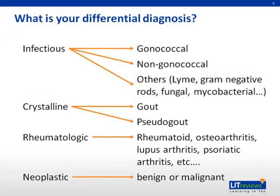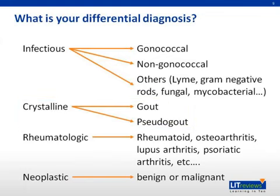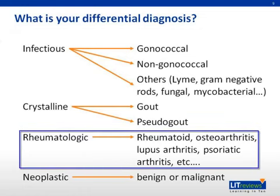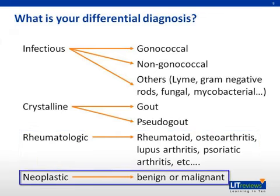In monoarticular arthritis, crystalline arthritis should also be considered, although these are less likely in a younger patient. The crystalline arthritides are gout and pseudogout. Other, although less likely, possibilities are rheumatologic and include rheumatoid arthritis, osteoarthritis, lupus arthritis, psoriatic arthritis, and others. Last but not least, neoplastic etiologies should be considered because these are diagnoses that we don't want to miss. Neoplasm can be either benign or malignant.